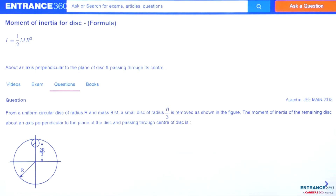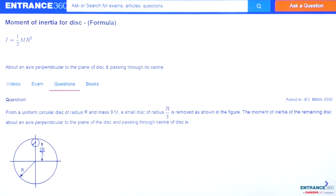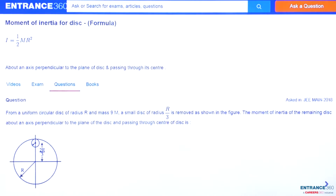Hi everyone, let's discuss a question from the chapter rotational motion. This question is asked in JEE Mains 2018. From a uniform circular disk of radius r and mass 9m, a small disk of radius r/3 is removed. The moment of inertia of the remaining disk about an axis perpendicular to the plane of the disk and passing through the center of the disk is required.